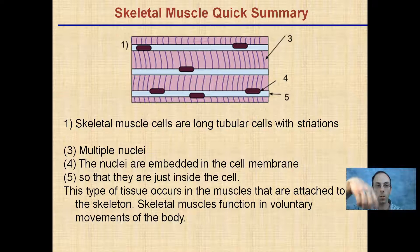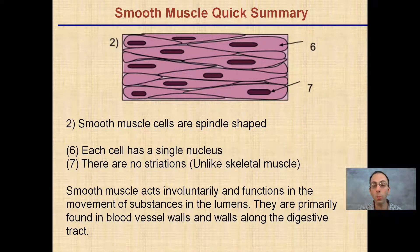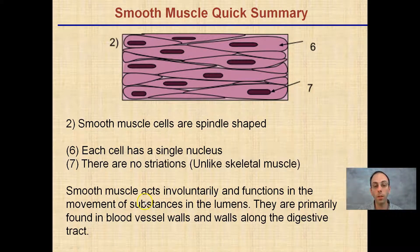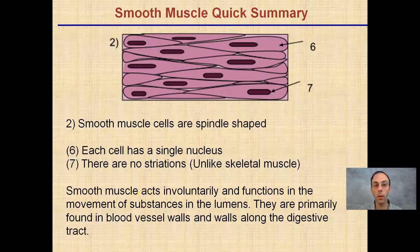Smooth muscle cells are spindle-shaped — notice the definite shape change compared to skeletal. Each cell has a single nucleus. There are no striations; see how they appear smooth compared to the lines we saw in skeletal muscle. Smooth muscle acts involuntarily and functions in the movement of substances through lumens. It is primarily found in blood vessel walls and walls of the digestive tract — areas we don't consciously think about moving, but they contract on their own.